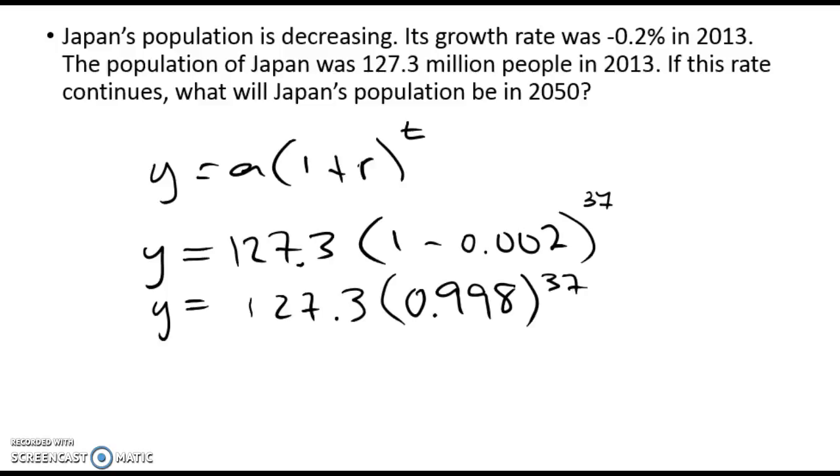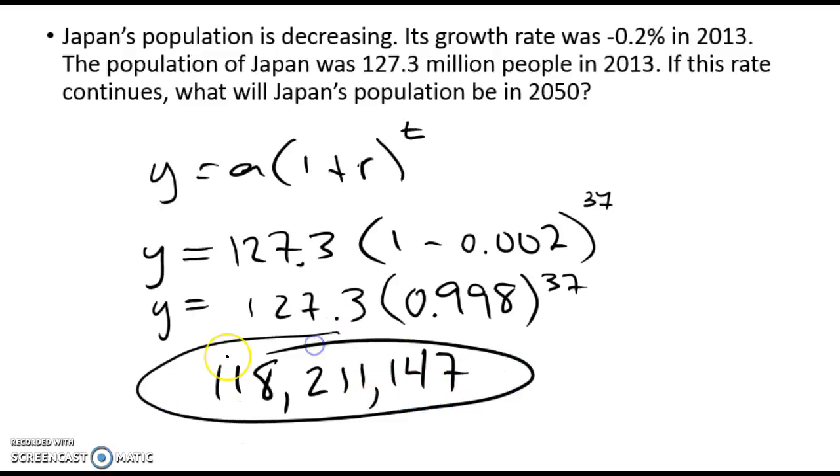And you're going to wind up with a long irrational number, and then I'm going to multiply it. I'm going to leave that in my calculator and multiply it by 127.3. And you get your final answer to be 118,211,147 people in Japan in 2050.